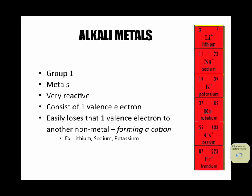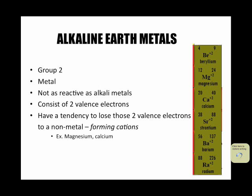The next group in the periodic table, right next to it in group number two, are the alkaline earth metals. They too are metals — hence the name alkaline earth metals. They're not as reactive as alkali metals, which means reactivity lowers as we move from left to right towards the aluminum ladder in terms of the metals.